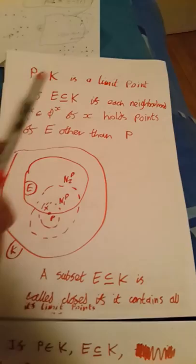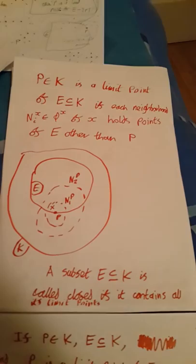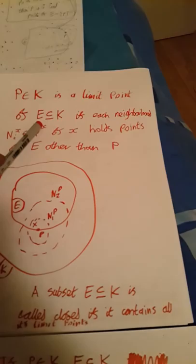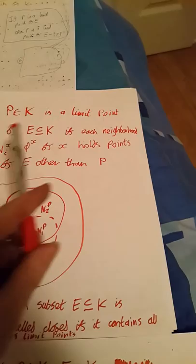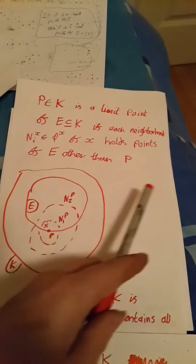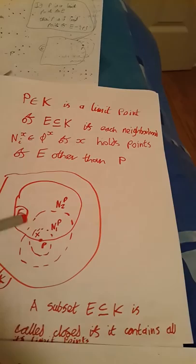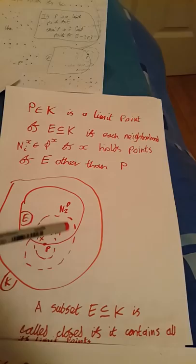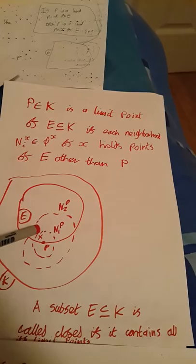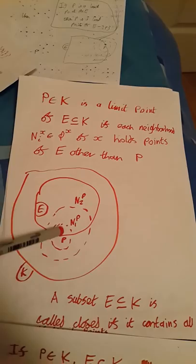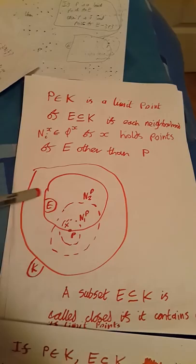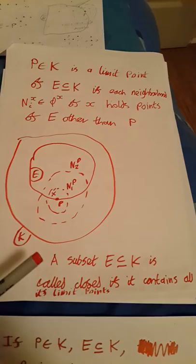Now we get to the critical notion of limit points, also known as limit elements. A point P in a Fréchet V-space is a limit point of a subset E of the ambient space K if every neighborhood of point P contains a point of E other than P itself. In the example shown, this subset E has a point P which is a limit point because every neighborhood associated with P contains at least one point of E other than P.